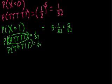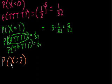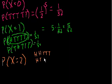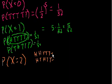Now it gets interesting. What is the probability that X equals 2 — that I get exactly two heads out of five flips? Each scenario still has a 1 out of 32 probability. Now we have to think about how many of these scenarios satisfy our condition of two heads. We have five flips and we're choosing two of them to be heads.